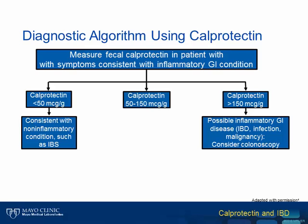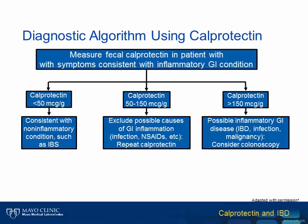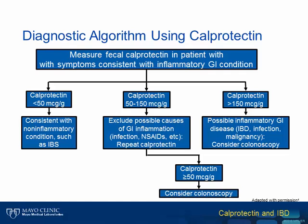For a borderline calprotectin result between 50 and 150 micrograms per gram, it would be important to exclude possible causes of GI inflammation such as the use of non-steroidal anti-inflammatories. After waiting for a period of time, possibly one to two weeks, testing for calprotectin could be repeated. At this time, if the calprotectin is still greater than 50 micrograms per gram, then a colonoscopy might be indicated. However, if the calprotectin has decreased and is now below 50 micrograms per gram, a non-inflammatory condition is more likely. Although the specific cutoffs may vary, the take-home message is that a low fecal calprotectin result is indicative of a non-inflammatory condition while an elevated calprotectin is consistent with some type of inflammatory GI disease.